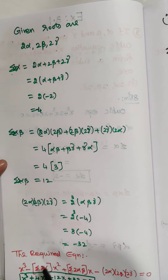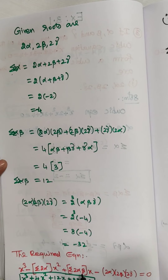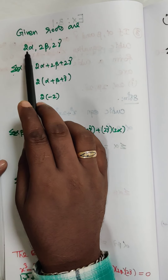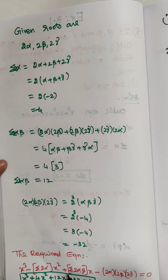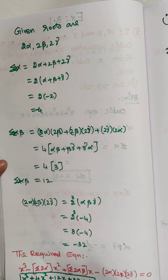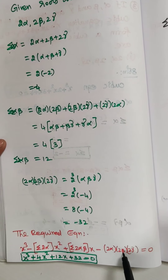The required cubic equation is: x³ − (summation 2α)x² + (summation 2α·2β)x − 2α·2β·2γ = 0. This follows the general cubic equation form: x³ − (summation α)x² + (summation αβ)x − αβγ = 0. Since the roots are 2α, 2β, 2γ, we substitute the corresponding values.